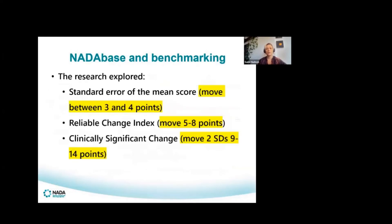The research specifically explored the standard error of the mean score, the reliable change index, and clinically significant change — three ways of exploring effectiveness. Each has specific cut-offs for determining whether change has occurred. That means whether there's been improvement, no change, or deterioration.